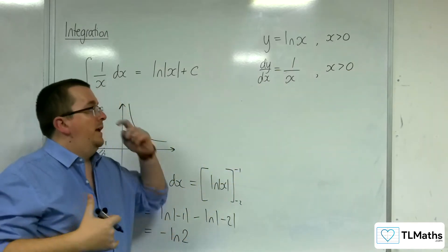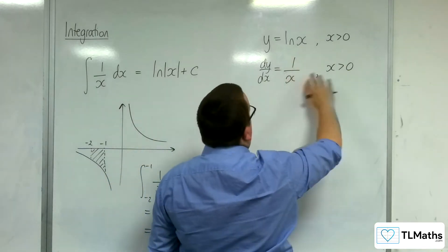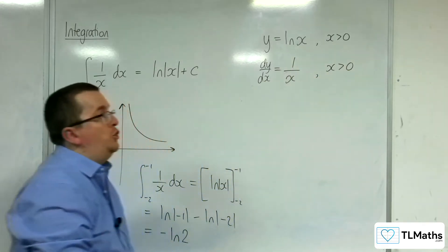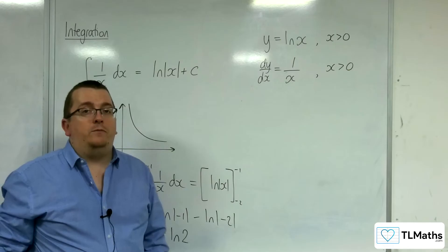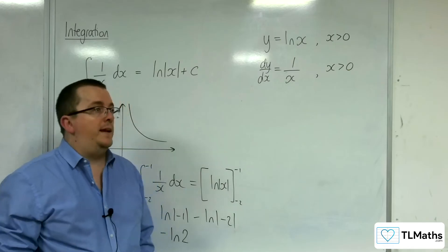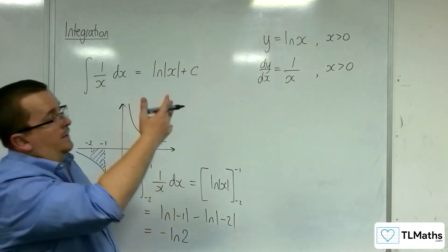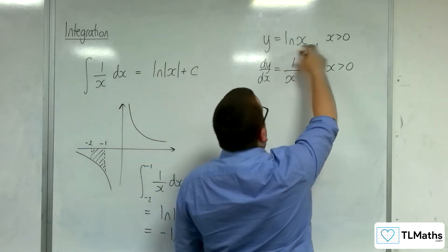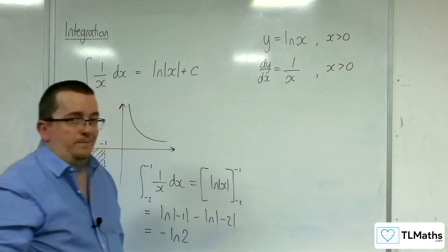So in actual fact, when you differentiate ln of x, really there is this extra condition that we just haven't really written down. Because we're taking ln of x only to exist for x being greater than 0 anyway.